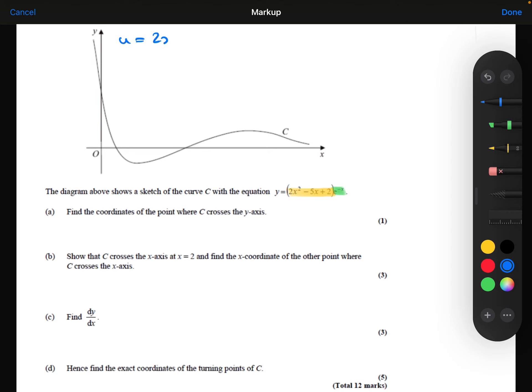So let me call the quadratic my u function and the exponential can be my v function. So u' differentiating this: the 2x squared differentiates to be 4x, the minus 5x differentiates to be minus 5. Now differentiating the v function: the exponential differentiates to be the exponential, but by the chain rule I need to multiply by minus 1 because that's the coefficient of the x.